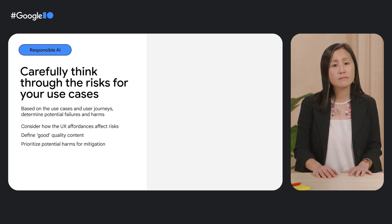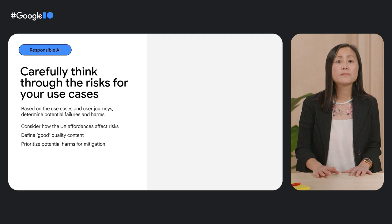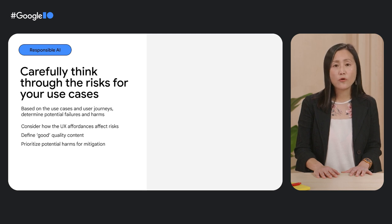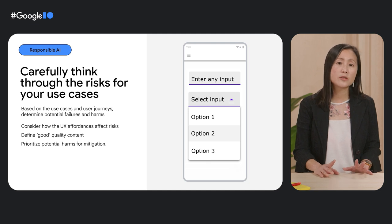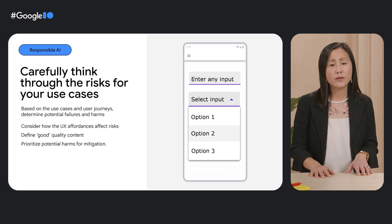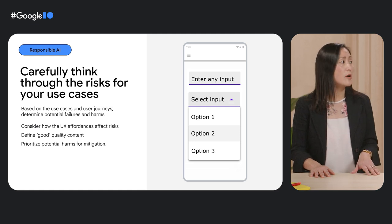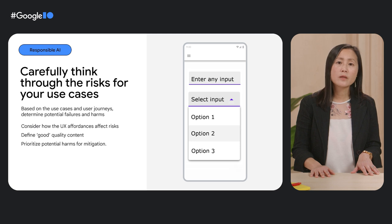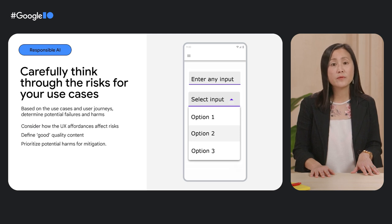Carefully think through the risks for your use cases. For example, what harms are likely for use cases and user journeys? If your use case is to summarize medical journals, the risks and potential impact of harms are much different and probably higher than if your use case is to help creative writers refine their own text. Also consider how UX affordances affect these risks — for example, in a UI with two input options, risks are considerably different whether users can input any text versus selecting from a list of prompts. You'll need clear definitions on what you're avoiding, as well as being intentional about what constitutes high-quality content for your product use cases. You'll need it in order to evaluate outputs from the model during testing later.